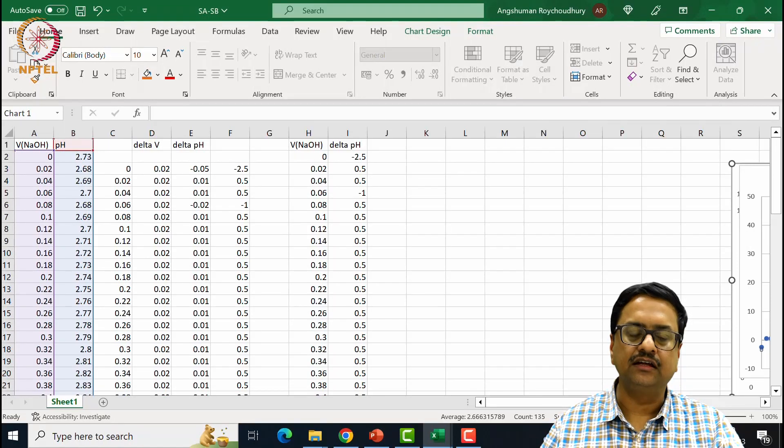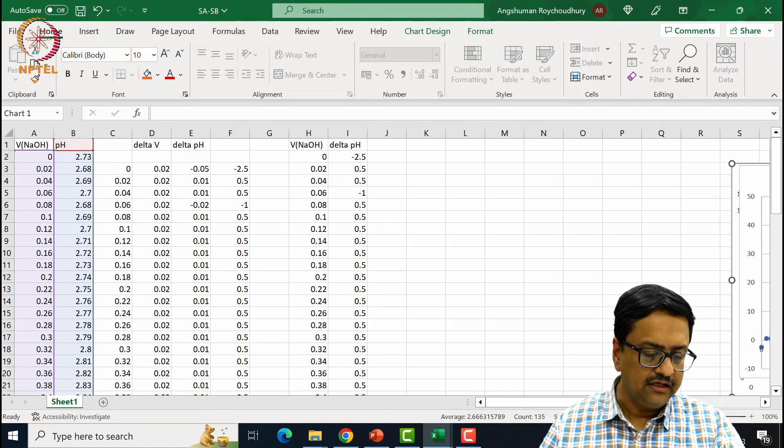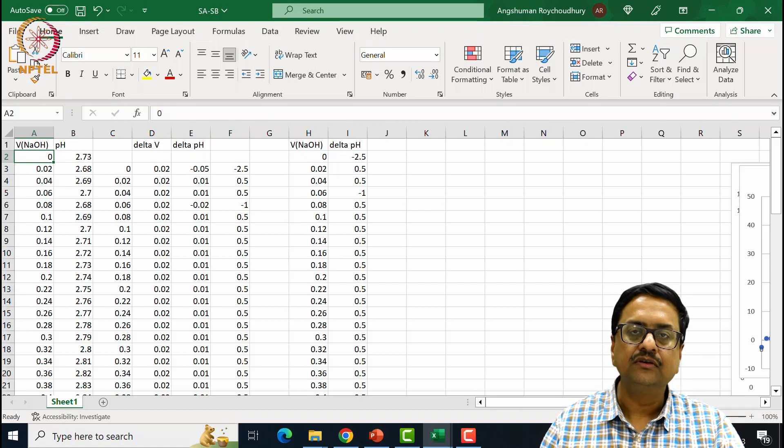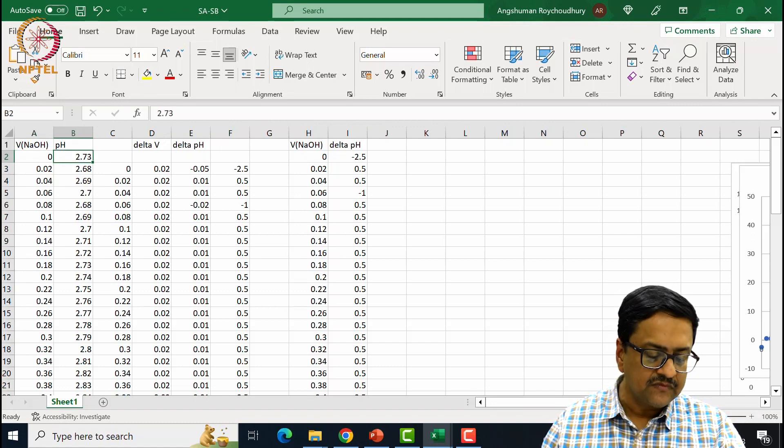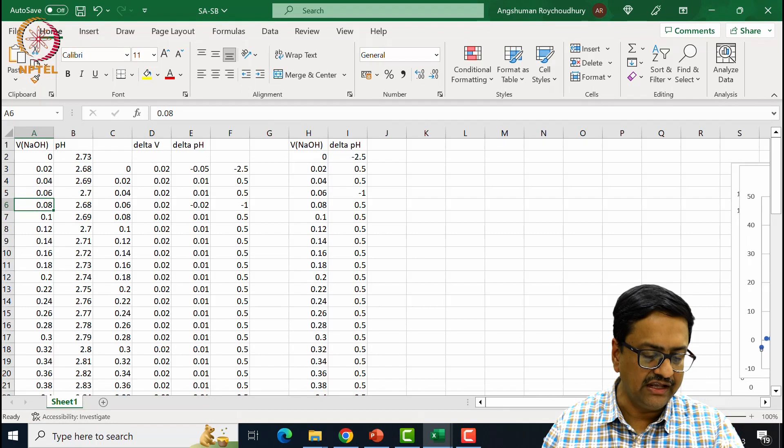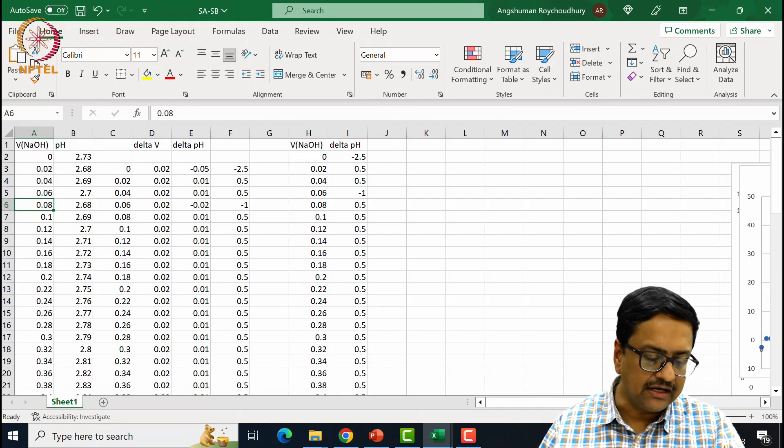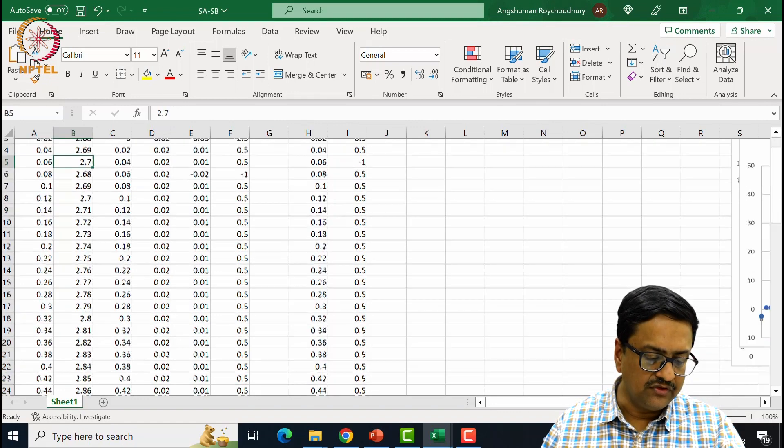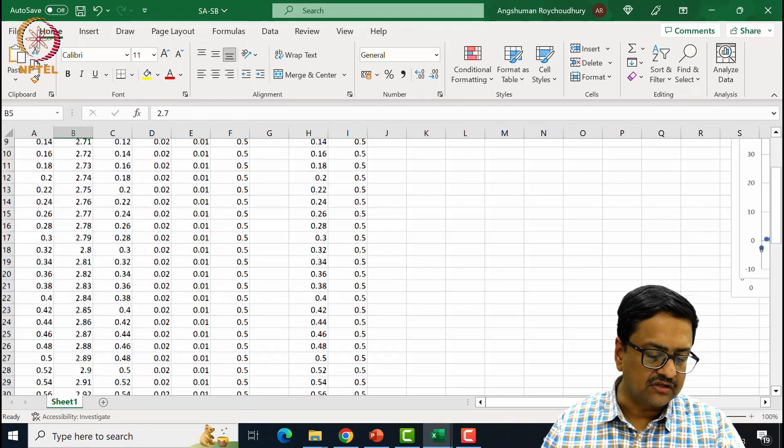What you are seeing here in this screen is the volume of NaOH that is marked 0, 0, and we started at 2.73 value of pH. And then we continued adding small, small fractions 0.02, 0.06, 0.08. That means every time we are adding 0.02 ml of NaOH. And we noted down the corresponding value for the pH.